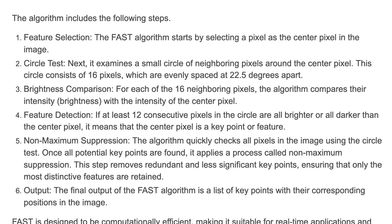Next is non-maximum suppression. The algorithm quickly checks all pixels in the image using the circle test. Once all potential key points are found, it applies a process called non-maximum suppression. This step removes redundant and less significant key points, ensuring that only the most distinctive features are retained. The output of the FAST algorithm is a list of key points with their corresponding positions in the image.